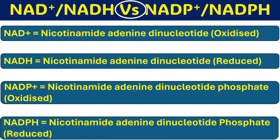First let us see the full form of these four different abbreviations. NAD+ is nicotinamide adenine dinucleotide, which is the oxidized form, and NADH is the reduced form of NAD+, because it carries one hydrogen. Similarly, NADP+ is the phosphorylated NAD — nicotinamide adenine dinucleotide phosphate — which is the oxidized form, and NADPH is its reduced form.